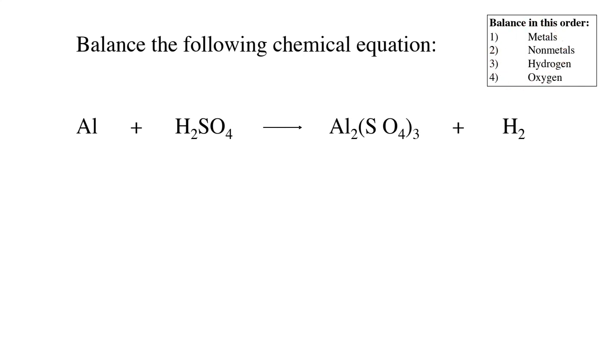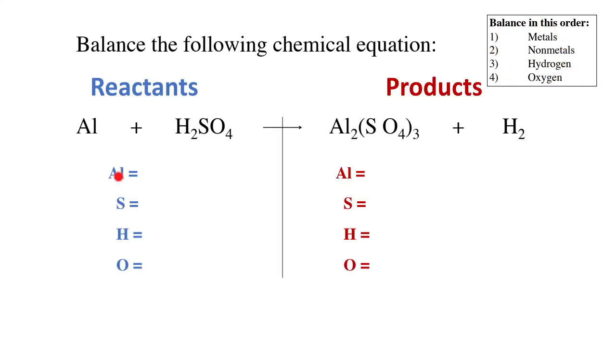First the metals, then non-metals, except for hydrogen and oxygen. Aluminum is first because it's a metal, then sulfur it's a non-metal, and finally hydrogen and oxygen.